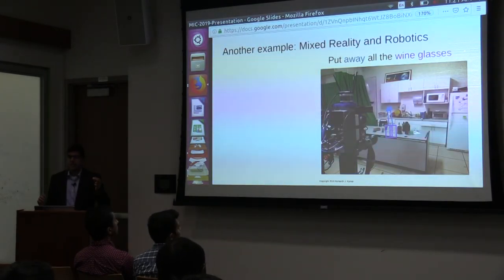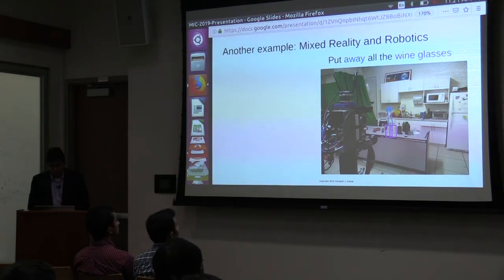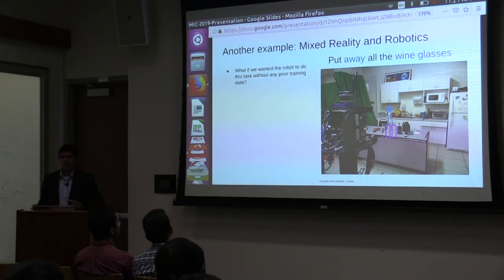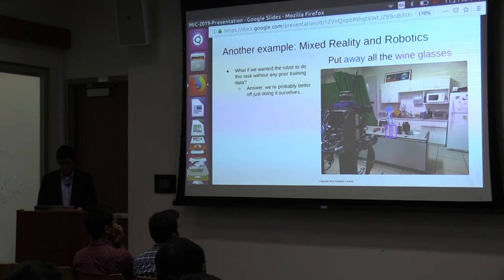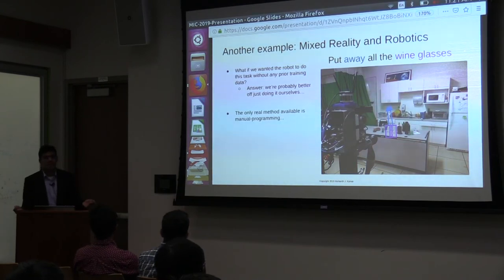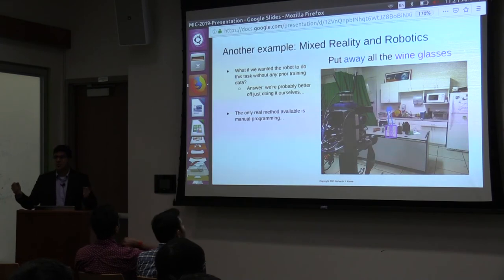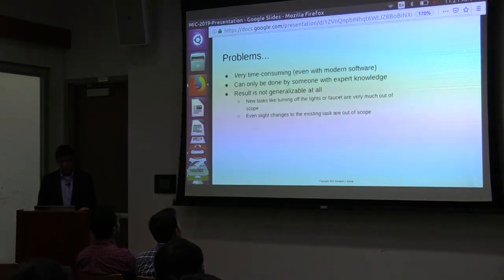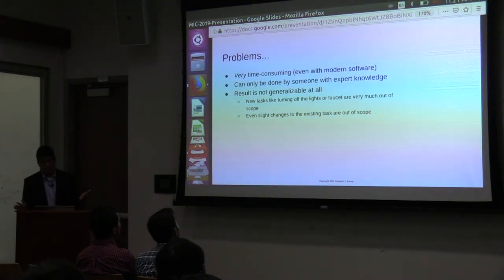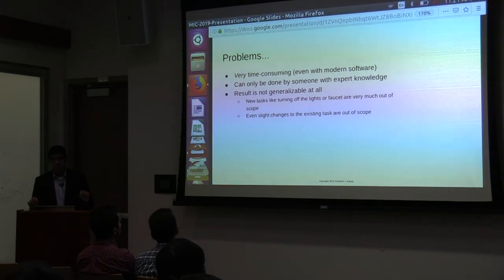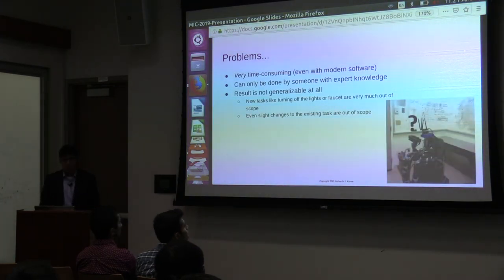Now, I want to show some work that does this in a much more overt way, much more leans on human collaboration. So let's say we want our robot to do a task like this. Put away all the wine glasses, which you see there on the right. Now, here's a catch. Let's say I wanted to do it without any training data, zero. So the answer to that is, well, we're probably better off just doing the task ourselves because the only real method available to do this with zero training data is to program it yourself. So you write, as a human designer, a program that will move forward like X inches, pick up the glass, and then put it in the thing. Obviously, there's some problems with that. That's pretty time-consuming. It requires someone with expert knowledge. And even if you moved the glasses slightly or you asked it to do a new task, the method does not work. So we're kind of confused.